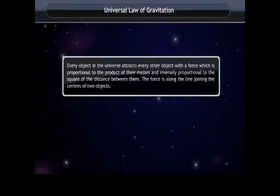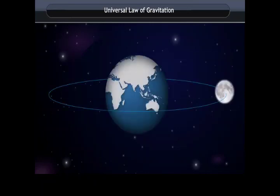Universal law of gravitation: every object in the universe attracts every other object with a force which is proportional to the product of their masses and inversely proportional to the square of the distance between them. The force is along the line joining the centers of the two objects.